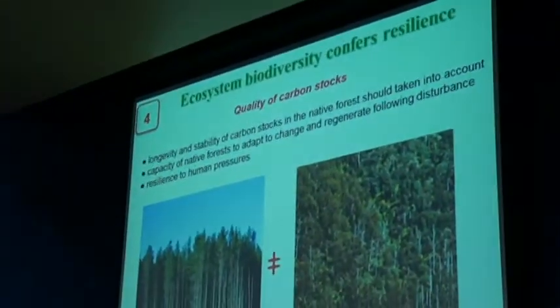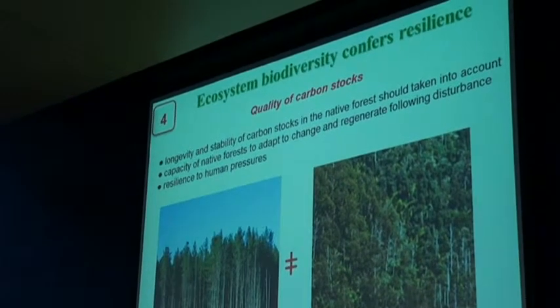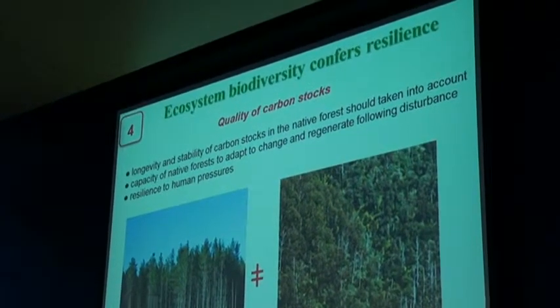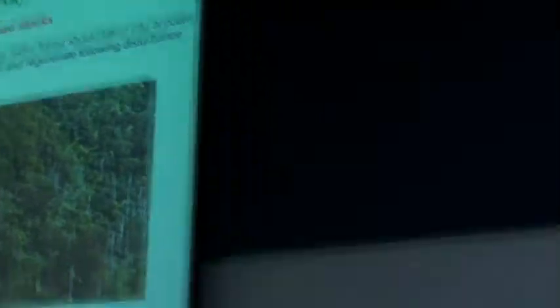The fourth concept is about ecosystem biodiversity and what is defined as a forest in the current Kyoto Protocol and carbon accounting rules. A forest is defined structurally as trees over a certain height and canopy density. So a plantation is the same as a natural forest. This means longevity, stability of carbon stocks, biodiversity, and resilience are not taken into account.